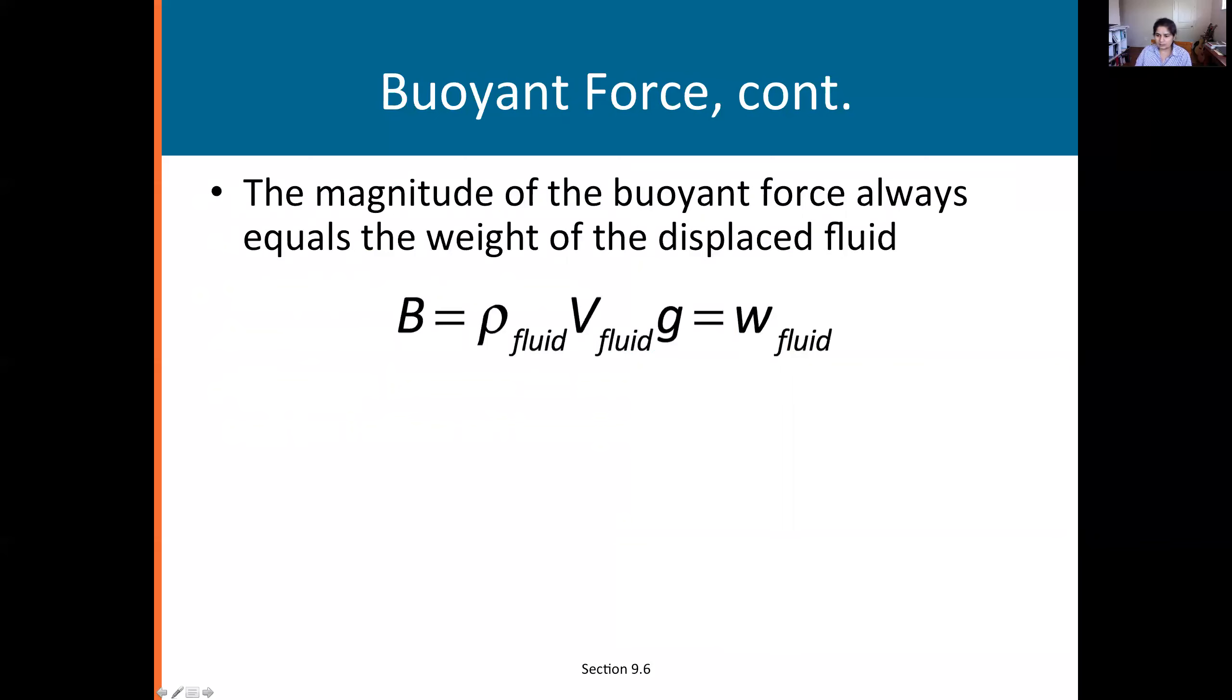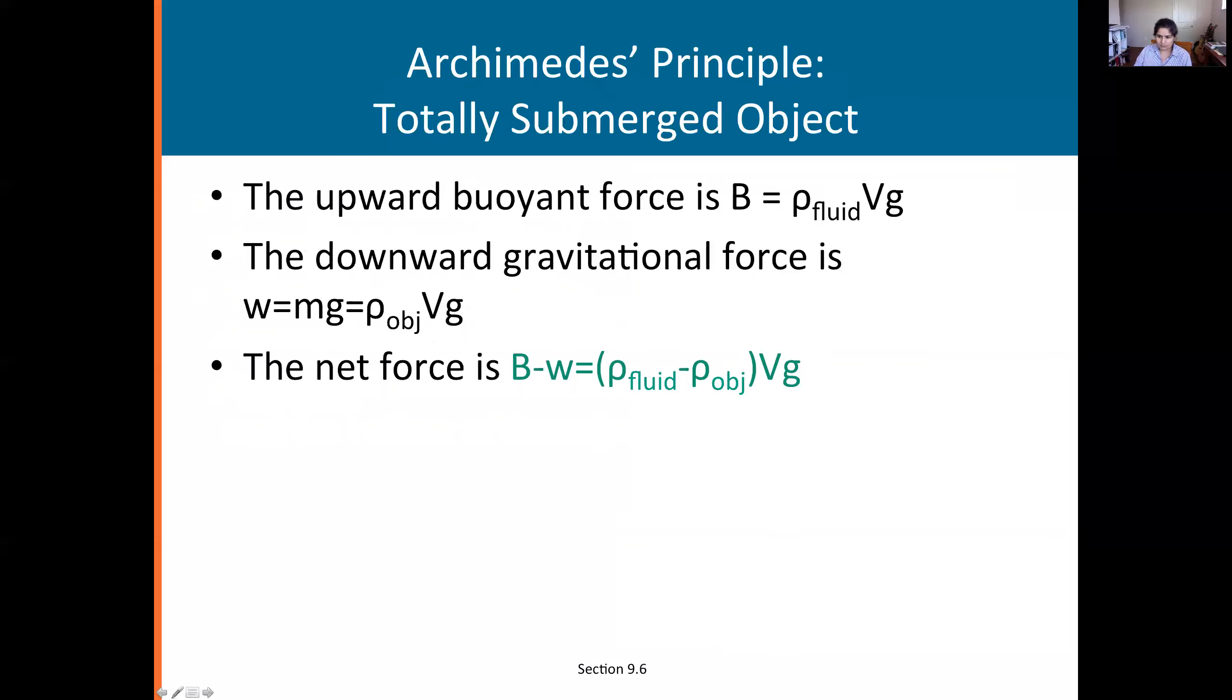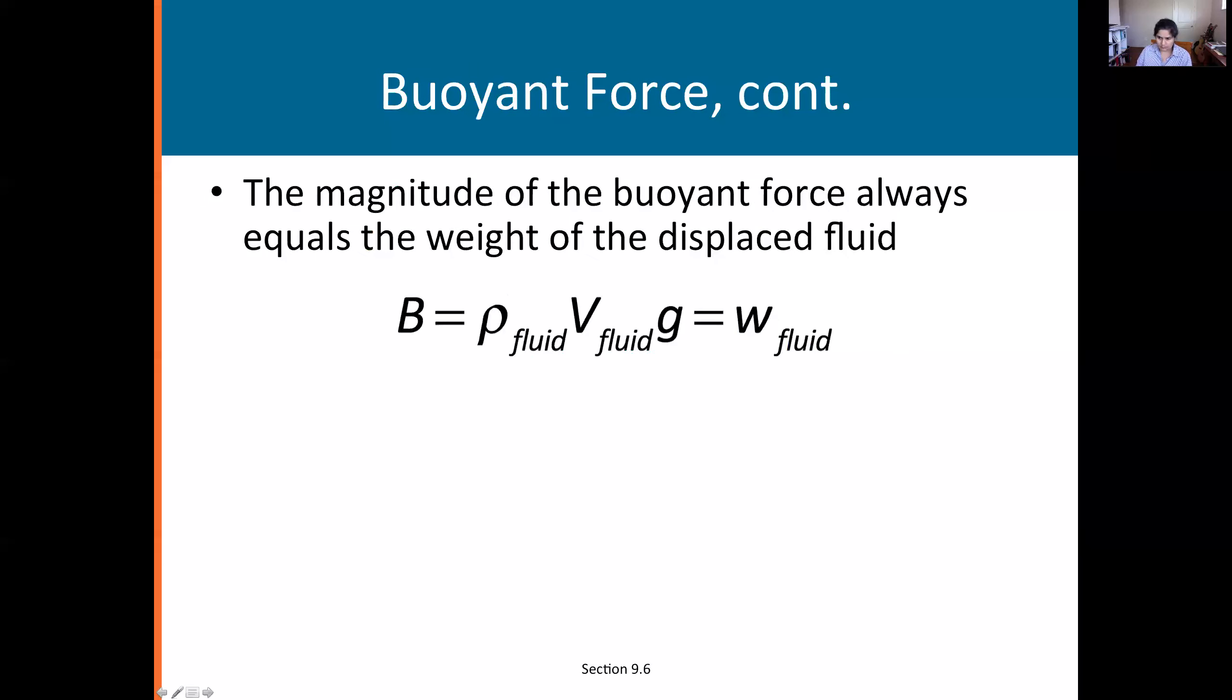The buoyant force B is equal to the weight of the fluid displaced. This is m times g for the fluid. The mass of the fluid is the density times the volume from the density definition. So the buoyant force becomes ρ_fluid times V_fluid times g. Now you understand where it came from.